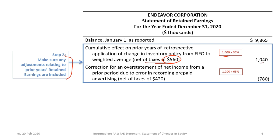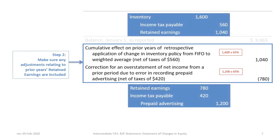The second correction is related to an overstatement of net income from a prior period due to an error recording prepaid advertising. The advertising should have been expensed but was instead classified as a prepaid, resulting in prior year income being higher than it should have been by $1.2 million before tax. At 35%, the tax adjustment is $420,000, resulting in a net after-tax adjustment to retained earnings of negative $780,000. If you are curious about the journal entries for these corrections, they are presented in the blue shaded areas.